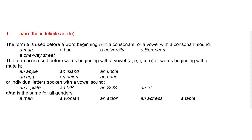The form A is used before a noun beginning with a consonant or a vowel with a consonant sound: a man, a university, a European.